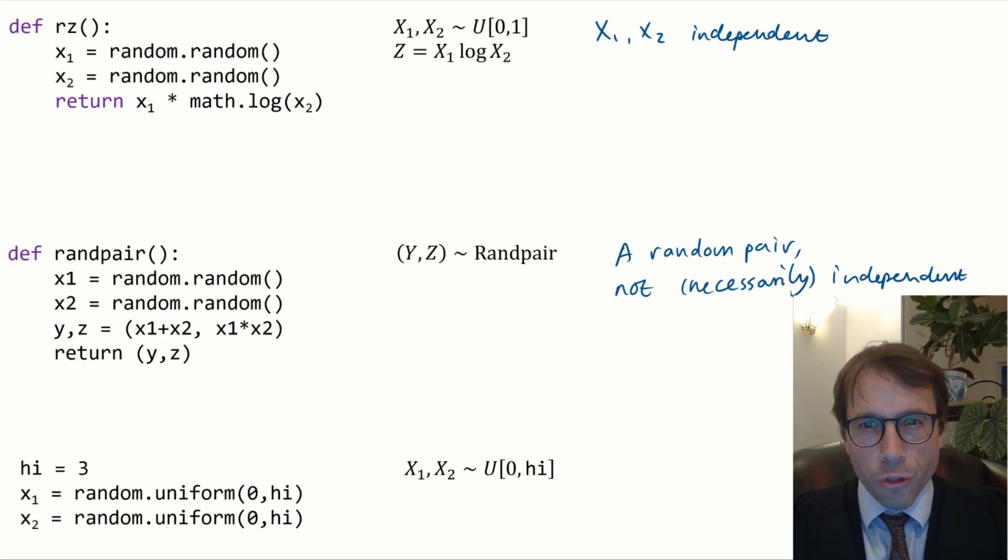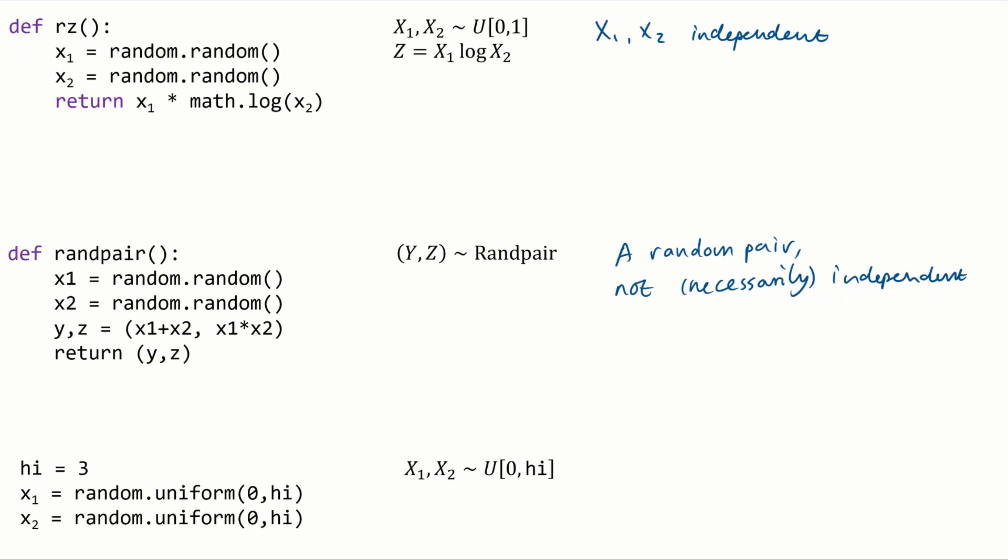Independence means assuming that we know the values of all of the non-random parameters. Whenever you see the word independent, you should always stick that in sotto voce, given the values for all of the parameters.